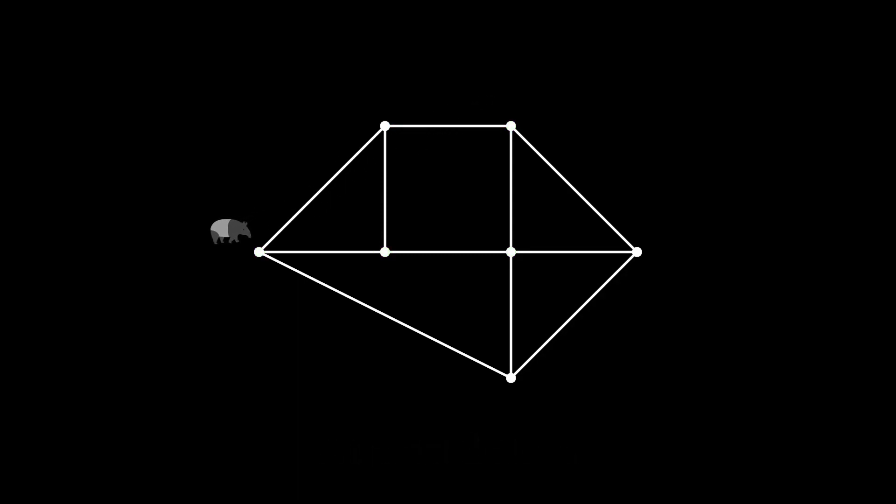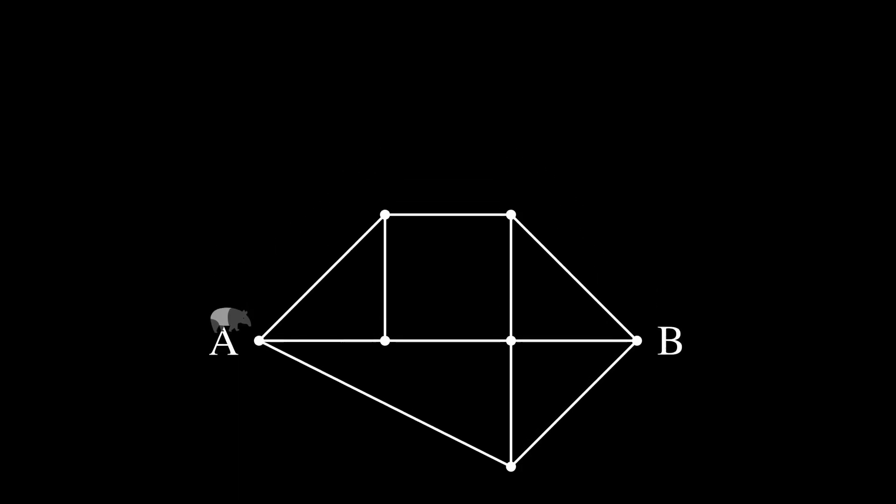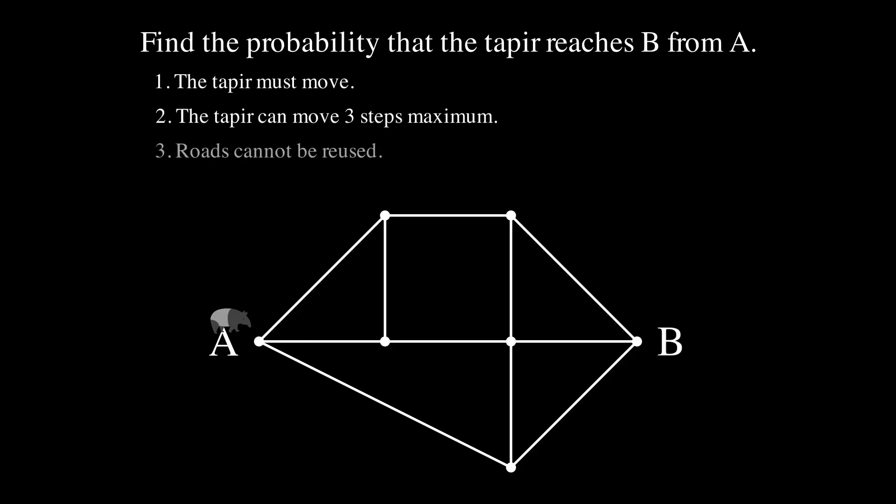The tape cannot move back the way it came from. However, it can revisit any stops it has made before. Points A and B are located at opposite ends of the maze. What is the probability that the tape, starting at A, reaches B at the end of its random journey?